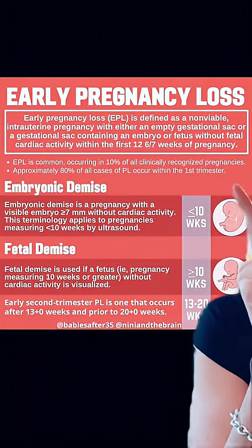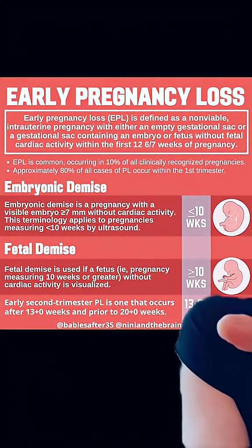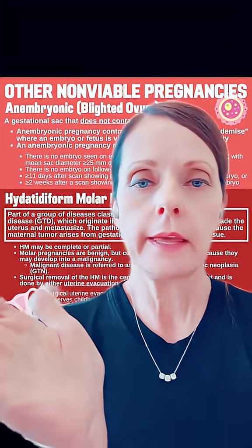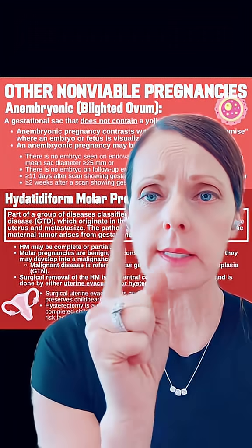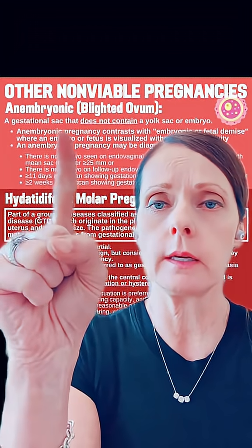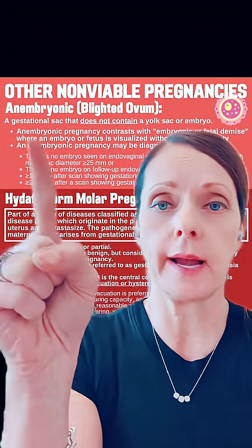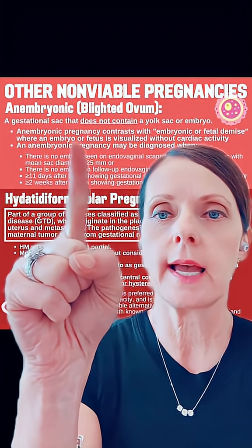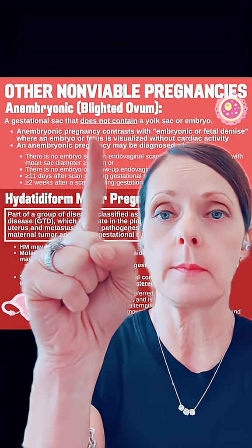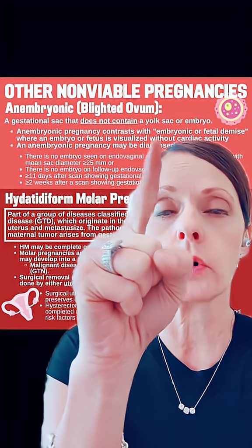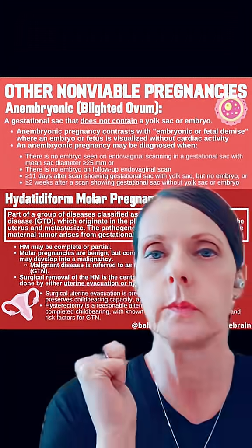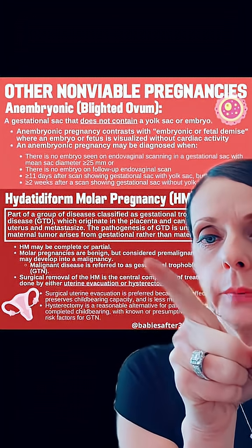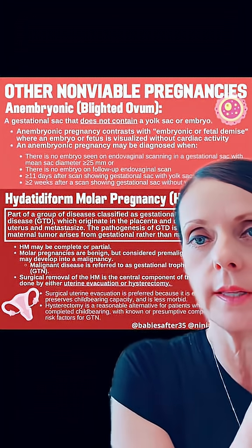Early pregnancy loss is defined a little bit differently, and you can pause to read this. There are also other forms of pregnancy loss. An anembryonic demise, or blighted ovum, is when a gestational sac is present but does not contain a yolk sac or an embryo. You also have a molar pregnancy, partial or complete.